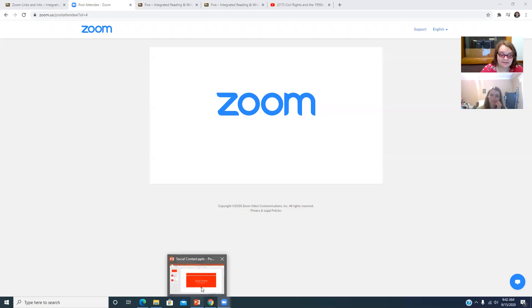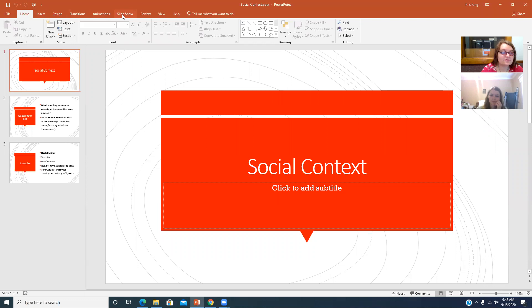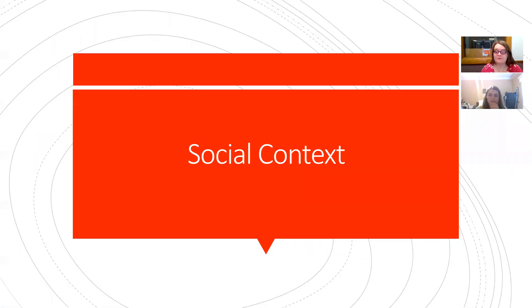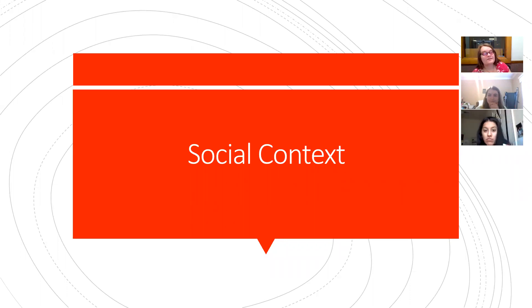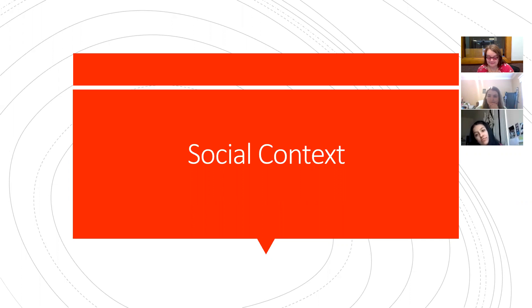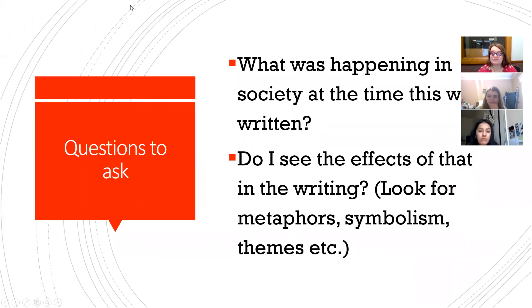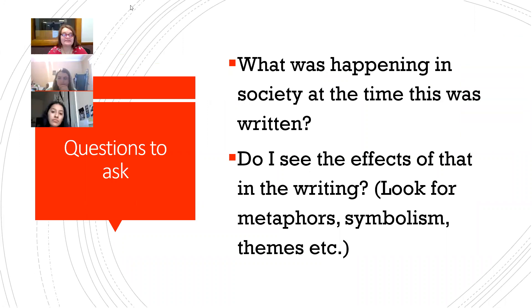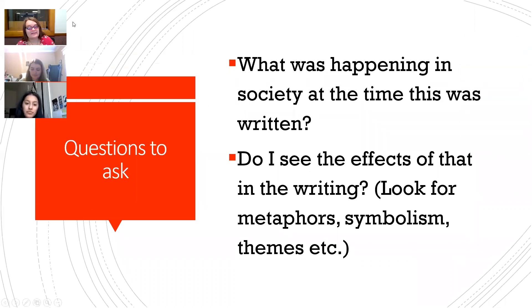Social context is very similar to author context and historical context — you just look for different things. When we talk about social context, we're looking at the social issues that were happening at the time of the writing, or the time that the writing takes place in. We want to ask ourselves: what was happening in society at the time it was written, and do I see the effects of that in the writing?